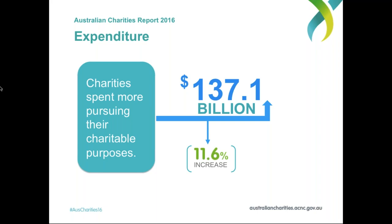On expenditure: charities spent just over $137 billion in the 2016 financial year pursuing their charitable purposes. That means around 95 percent of charity revenue is actually spent pursuing charitable purposes. People can be reassured that charities aren't hoarding revenue — they are spending it delivering their services. There was also a slight increase in expenditure in 2016, which was slightly higher than the corresponding increase in revenue.